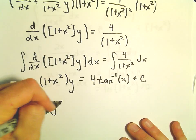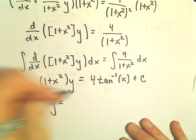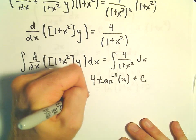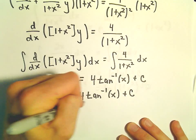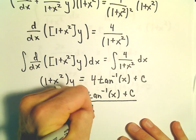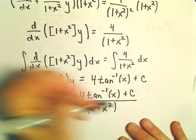And now we can get y by itself by just dividing. So we could write our solution as 4 arctangent of x plus c all divided by 1 plus x squared.